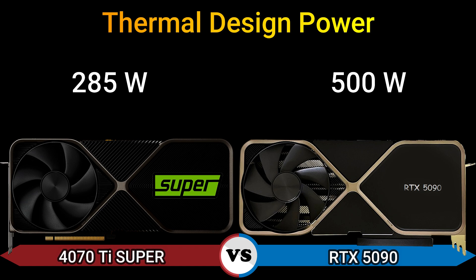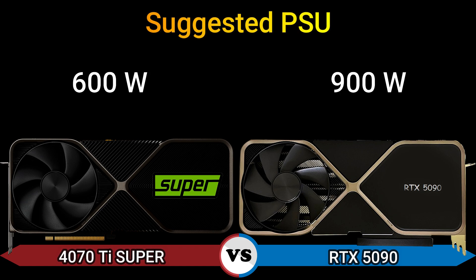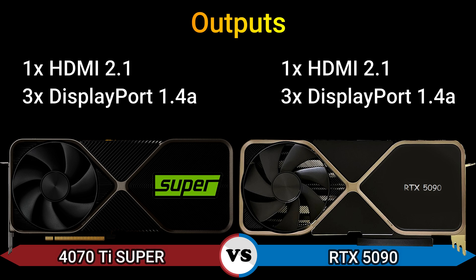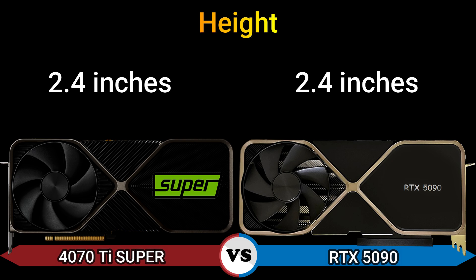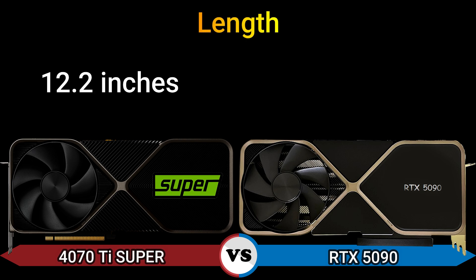Thermal design power: 285 W and 500 W. Suggested PSU: 600 W and 900 W. Outputs: 1x HDMI 2.1, 3x DisplayPort 1.4a. Power connector: 1x 16-pin. Height: 2.4 inch, width: 5.5 inch and 5.4 inch, length: 12.2 inch and 12 inch. Triple slot.